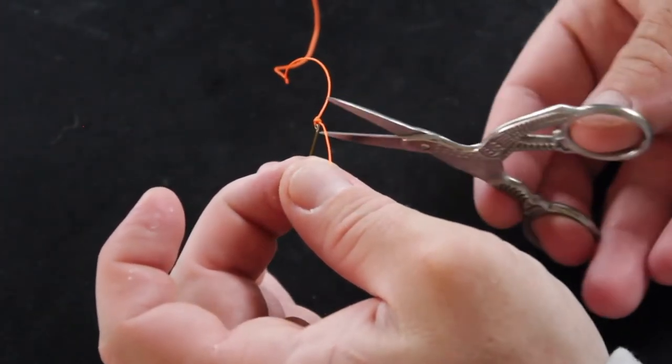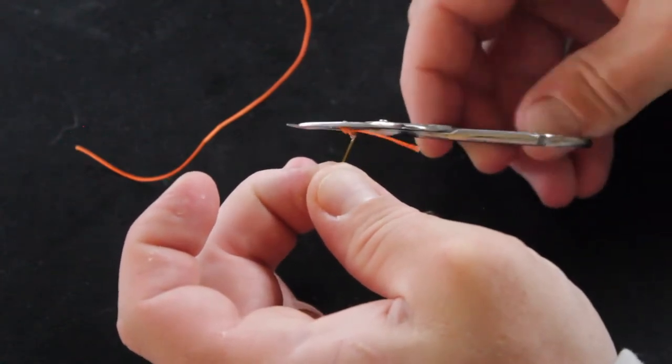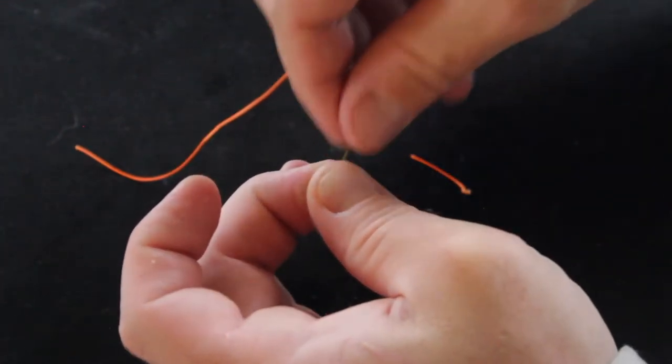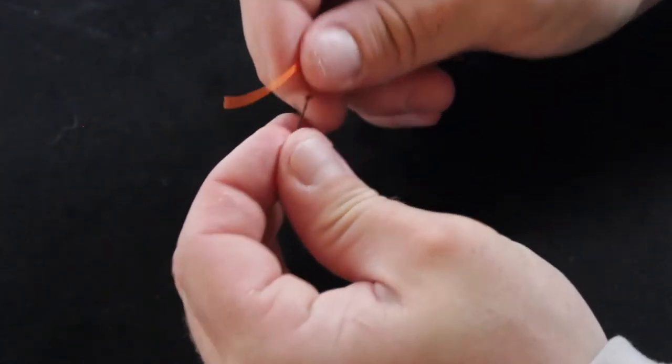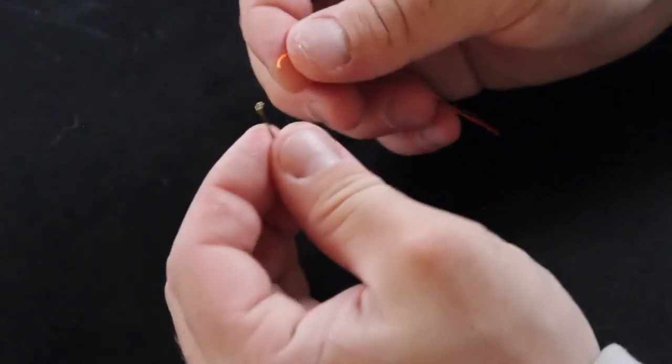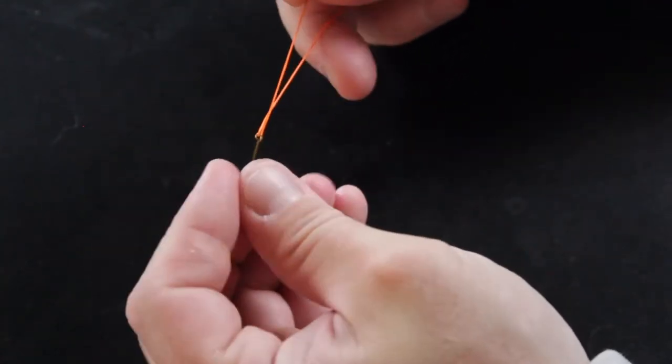Okay, so let's show you what the improved clinch looks like. Okay, so same process. There's just one more step. So we're going to put it through the eyelet.